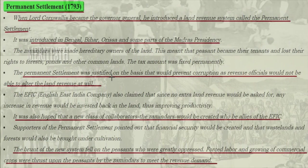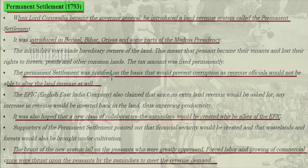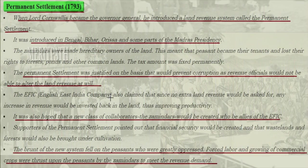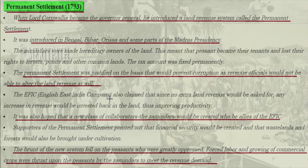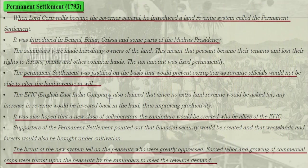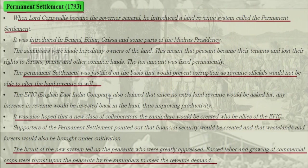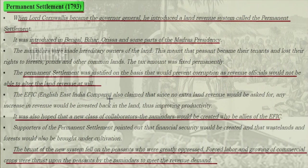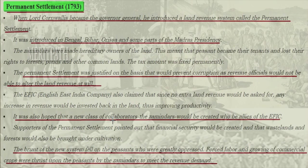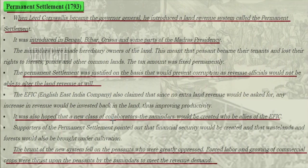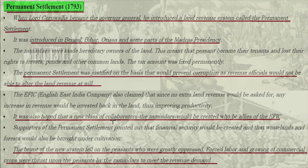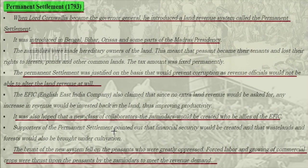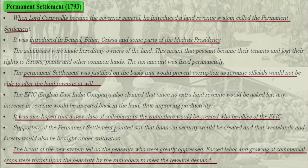The tax amount was fixed permanently. Permanent Settlement was justified on the basis that it would prevent corruption, because revenue officials would not be able to alter the land revenue at their will. The East India Company also claimed that since no extra land revenue would be asked for, any increase in revenue would be invested back in the land, improving productivity. It was hoped that a new class of collaborators, the Zamindars, would be created as allies of the English East India Company.